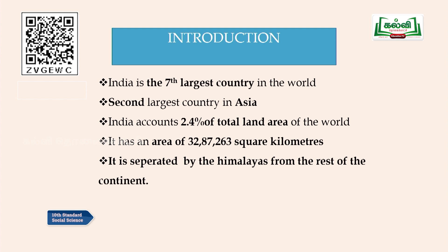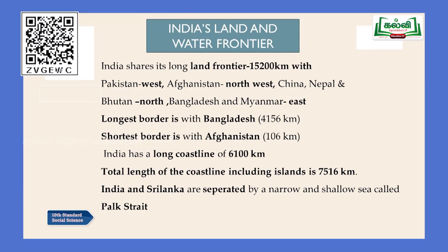India is the seventh largest country in the world and the second largest country in the Asian continent. The entire world is divided into seven continents, and Asia is the biggest continent. India lies in the southernmost part of the Asian continent, with China being the first largest country in Asia. India accounts for 2.4 percent of the total land area of the world, with an area of 3.28 million square kilometers, that is 32,87,263 square kilometers.